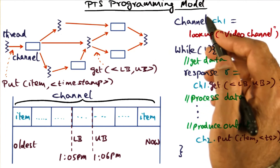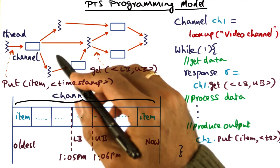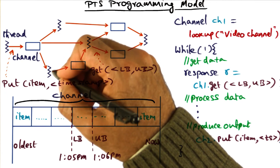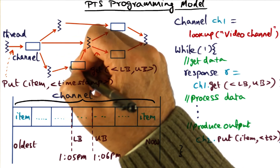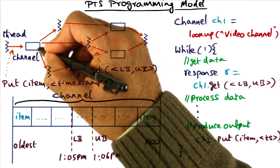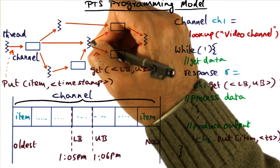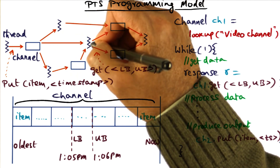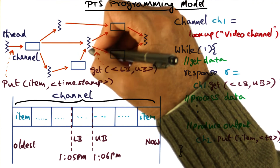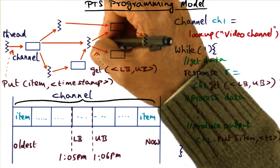So in a nutshell, the PTS programming model allows the ability to associate timestamps with data items produced by a computation. The model allows propagation of temporal causality because a computation can associate a timestamp with an item it produces based on the timestamp it received on the data obtained from its input channel. And thirdly, the fact that every stream is temporally indexed allows a computation to correlate incoming streams and recognize which data items are temporally related to one another by looking at the timestamps associated with the items fetched from the different channels.